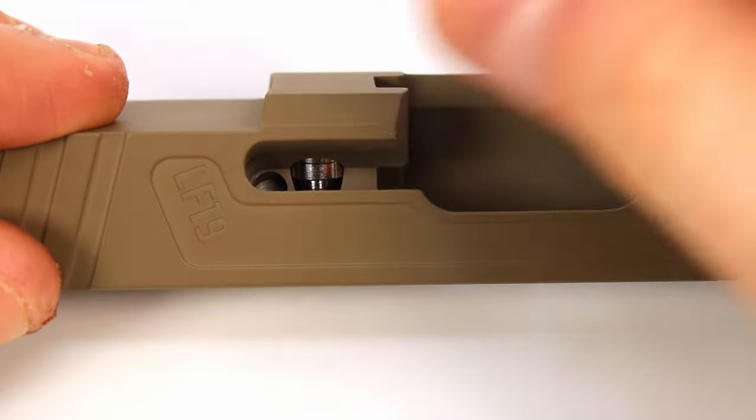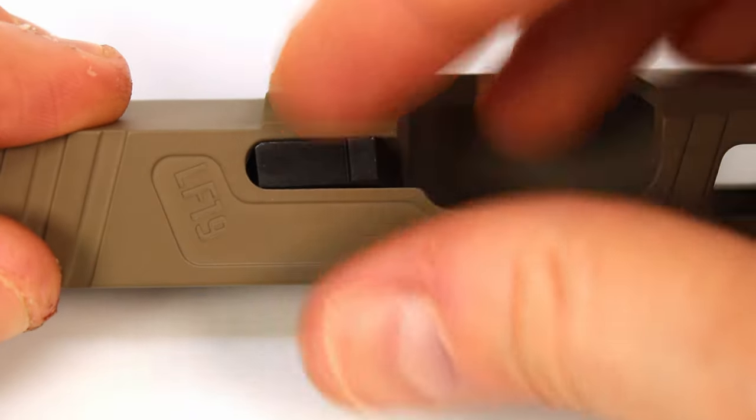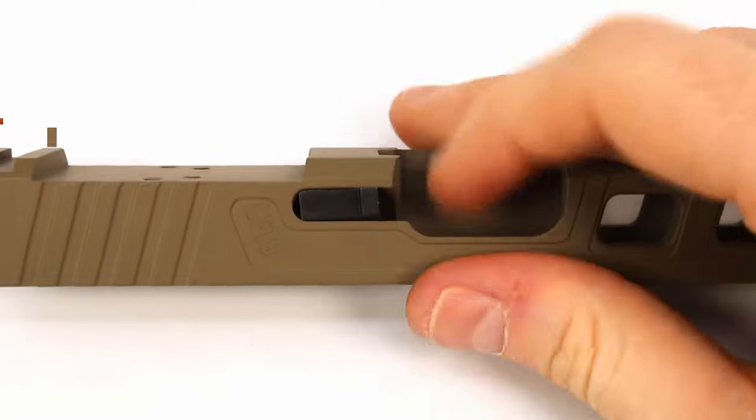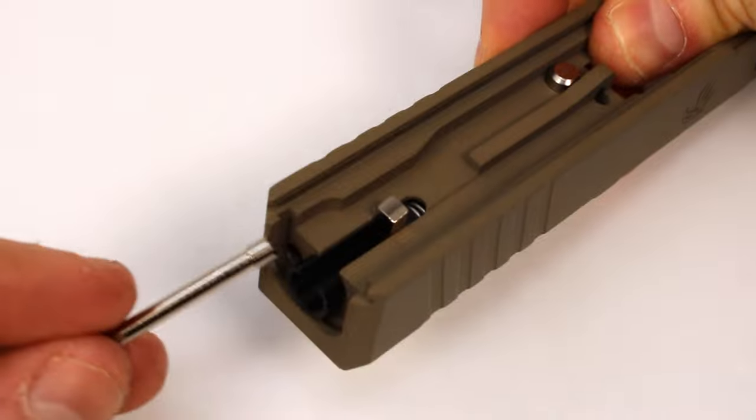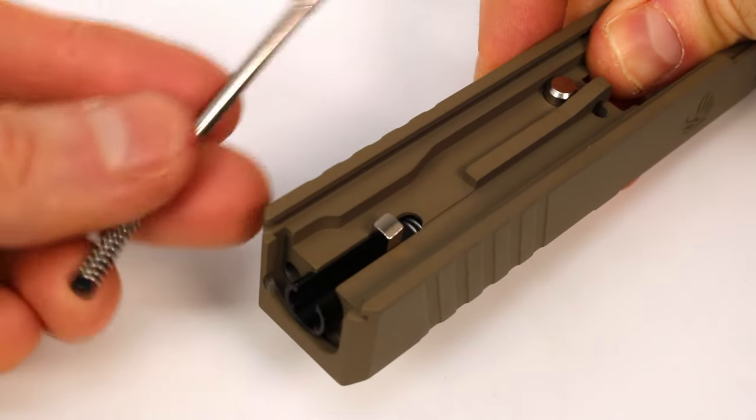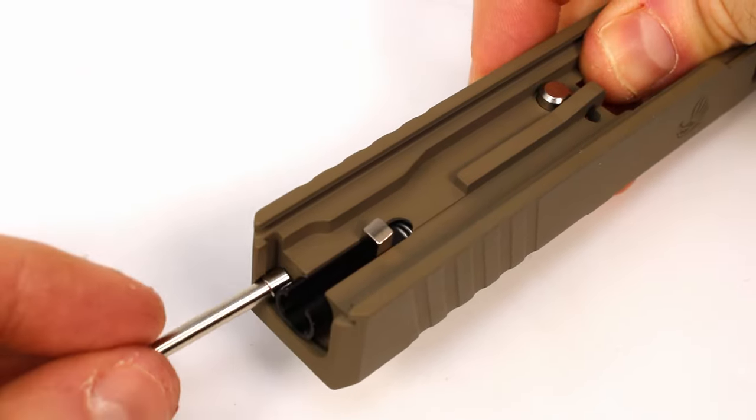Then we're going to come out to the back of the slide. You've got this little hole right here next to the channel liner, and we're going to insert that extractor rod assembly. You're going to do the rod end first.